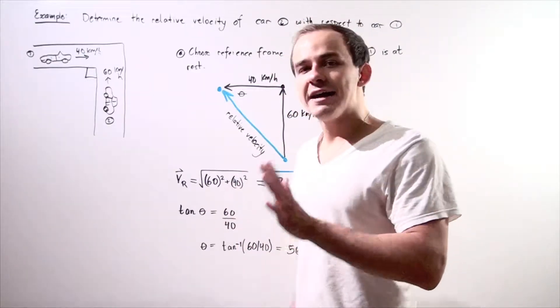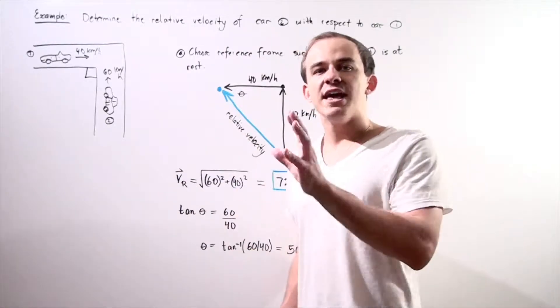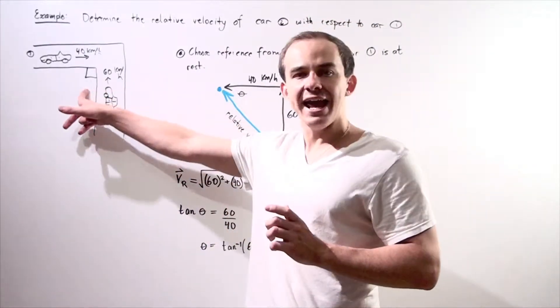So let's suppose that we have two cars moving towards a corner in a road and that corner is at a 90 degree angle.